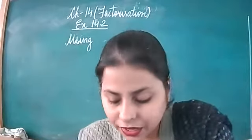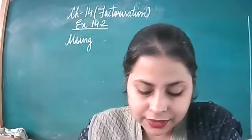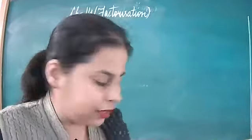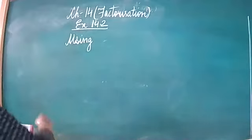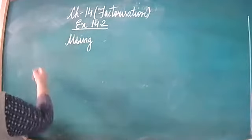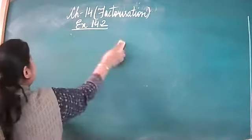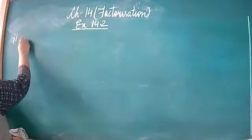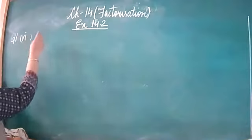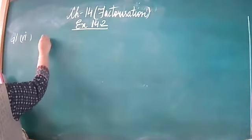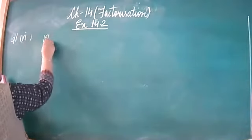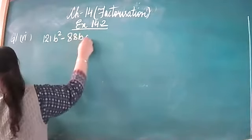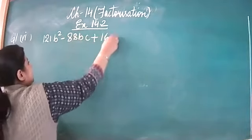Good morning everyone. Today we have to discuss Exercise 16.2 Question 1, 6th part. The expression is 121b squared minus 88bc plus 16c squared.